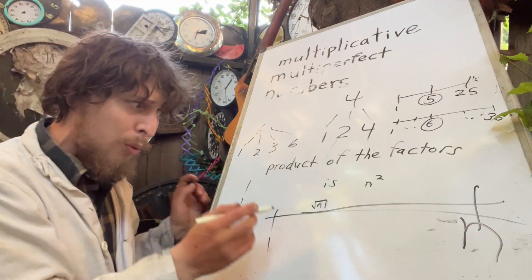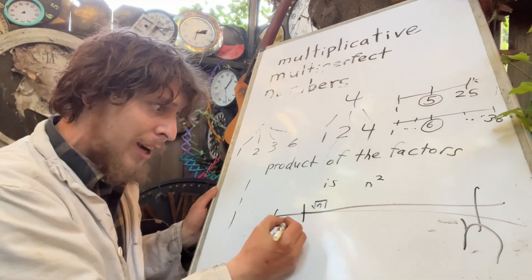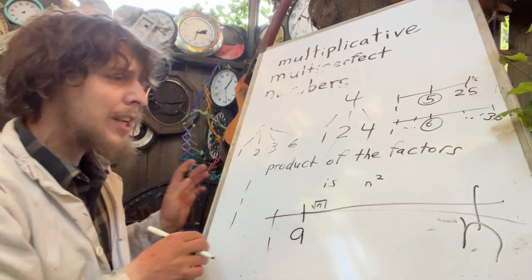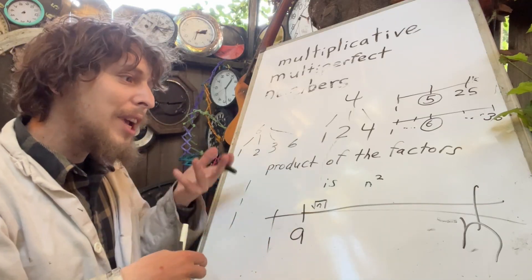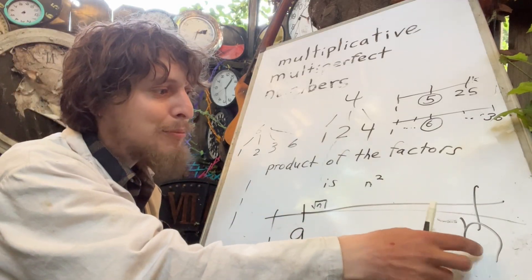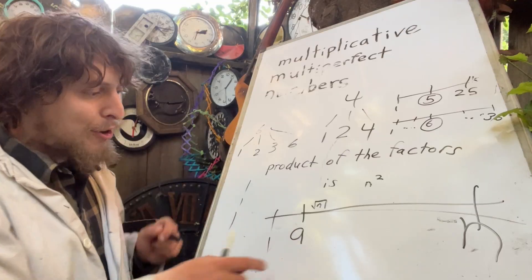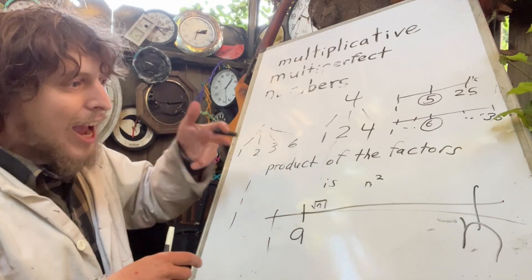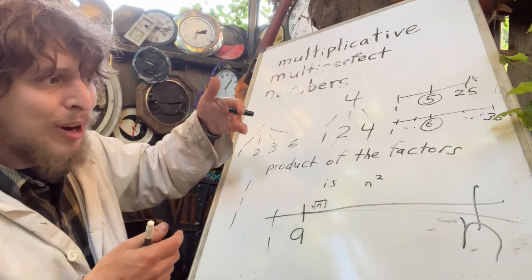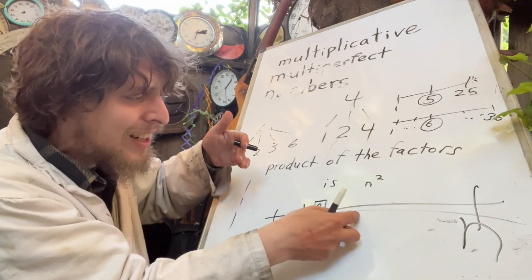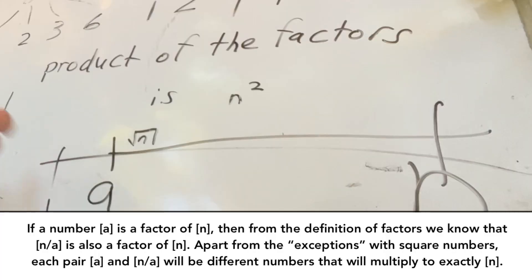Because otherwise, if we have a factor here, let's call it A of this number N, being a factor, A means, okay, I could take N, I could divide it by that, and I could get some other whole number result. And that other whole number, I could have divided N by that instead to get this one. So, if A is here, we also are going to have N divided by A here.